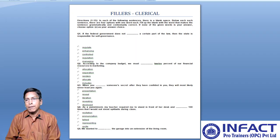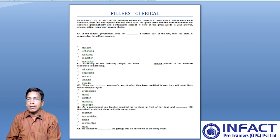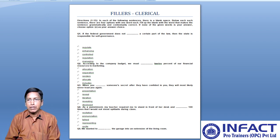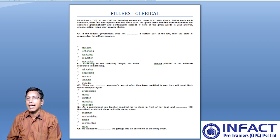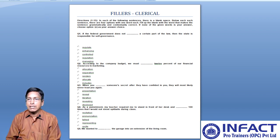Question number one: if the federal government does not dash a certain part of the law, then the state is responsible for self-governance. You are given five options: first, regulate; second, enhancing; third, controlled; fourth, regulation; and fifth, managing.